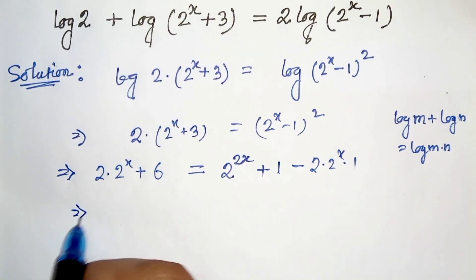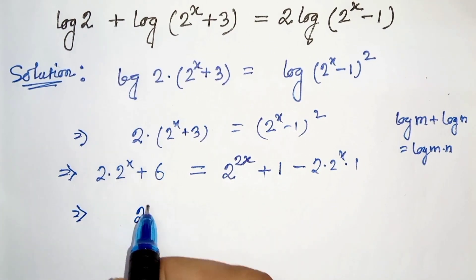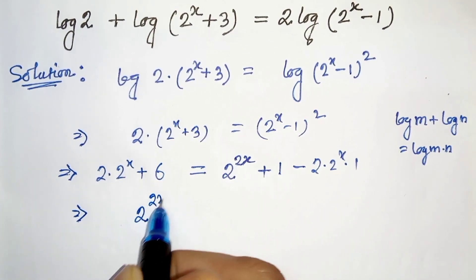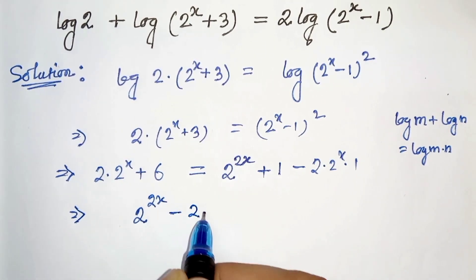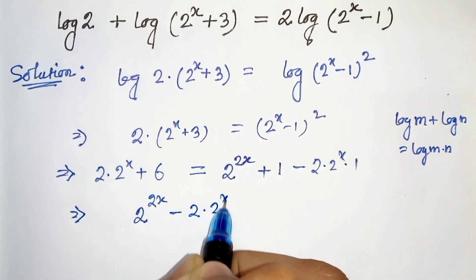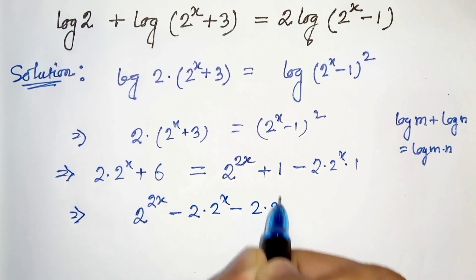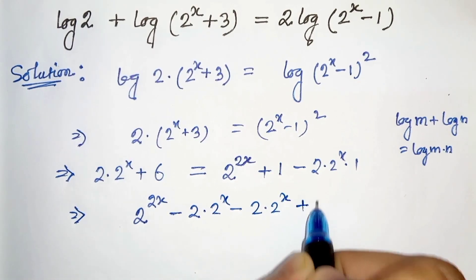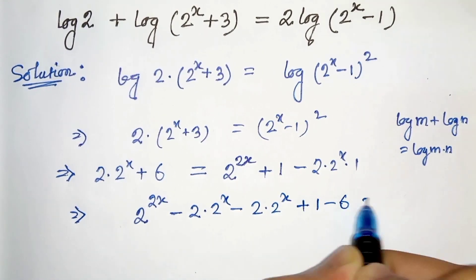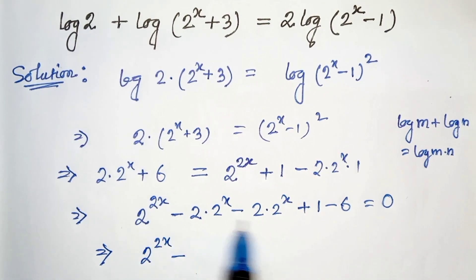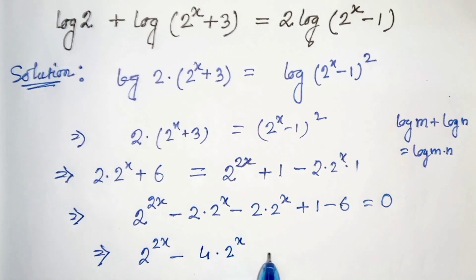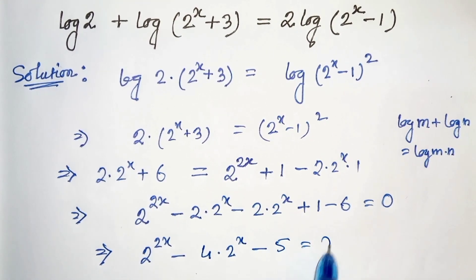Now let's take all the terms to one side. So we will get 2 to the power 2x minus 2 times 2 to the power x, minus 2 times 2 to the power x, plus 1 minus 6 equals to 0. In the next step we can write 2 to the power 2x, and combining like terms we get 4 times 2 to the power x, plus 2 to the power x — giving us 2 to the power 2x minus 4 times 2 to the power x minus 5 equals to 0.